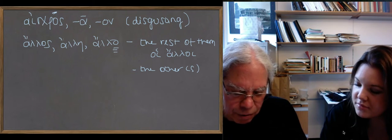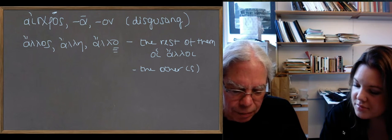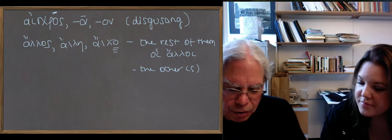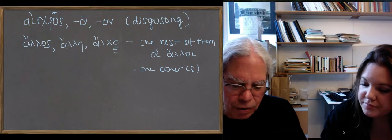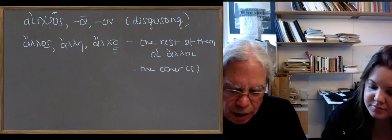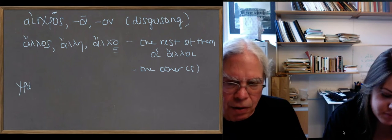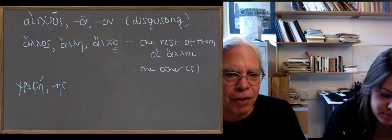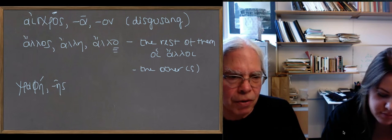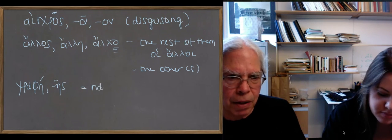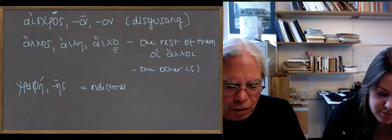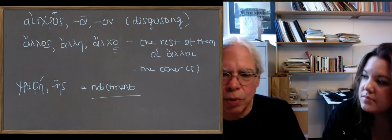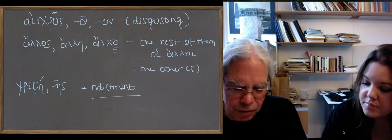The next word is another derivative of the root grapho. It's graphe, which you think would mean writing because those a-nouns are usually abstract nouns. But it's become specific and it means an indictment or a charge or a writ depending on what your legal system is. So you can say somebody can be prosecuted on a graphe of hubris, an indictment of hubris or impiety or stuff like that in Greek legal systems.